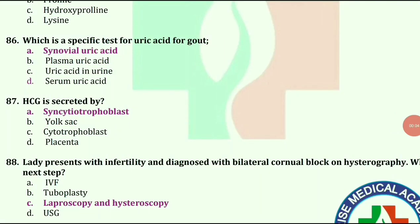HCG is secreted by syncytiotrophoblast. A lady presents with infertility and is diagnosed with bilateral cornual block on hysterography. What is the next step? Answer is laparoscopy and hysteroscopy.